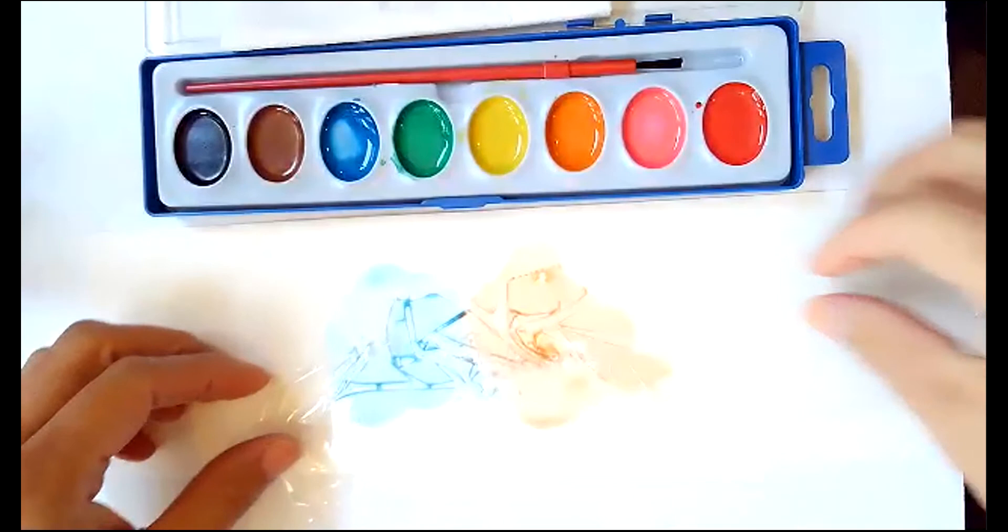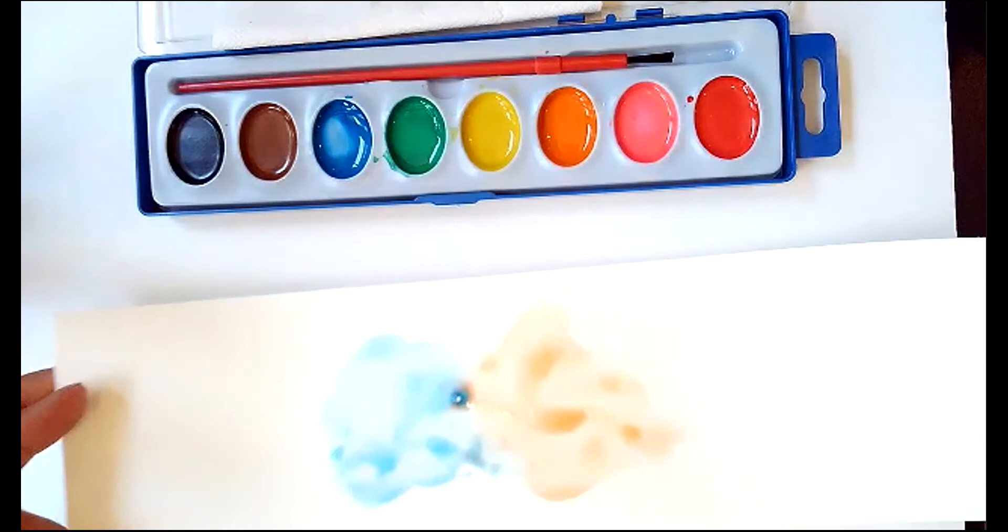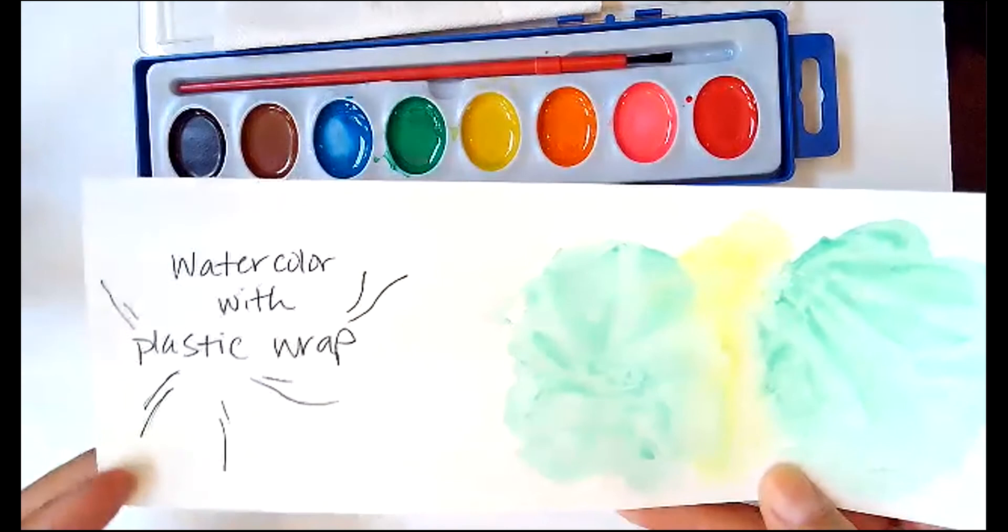Maybe even start mixing some. You can kind of press it down. And then just lift it off the paper. And you'll be left with a technique kind of like this. Where it kind of bubbles and mixes with pools in some areas. Here is an already made example of this. You can kind of see where the plastic created these pools here. See that? Watercolor plastic wrap.